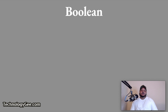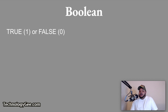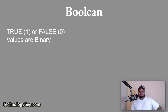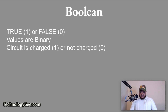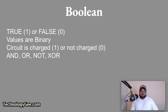Next, we're going to talk about Boolean. In computer science, a Boolean value — also called a bool, B-O-O-L — is a data type that has two possible values: true, represented by the number 1, or false, represented by the number 0. Boolean logic is named after the English mathematician George Boole, whose algebraic and logical systems are used in all modern digital computers. Boolean values are binary. Boolean logic is used to determine if a circuit is charged — represented by 1 — or not charged — represented by 0. Boolean logic can also be used for searches using the following comparisons: AND, OR, NOT, or XOR.